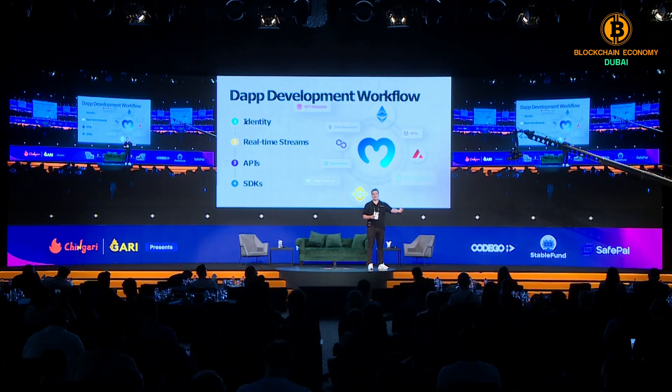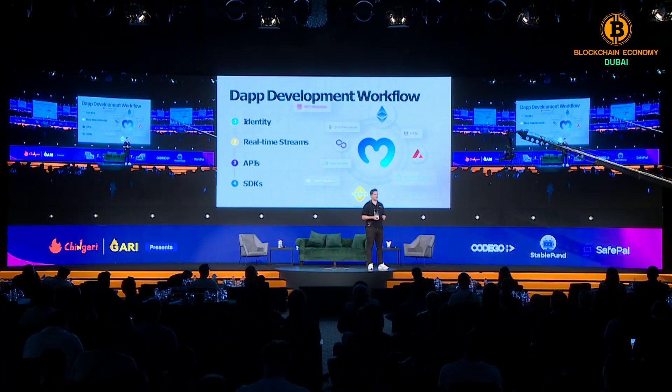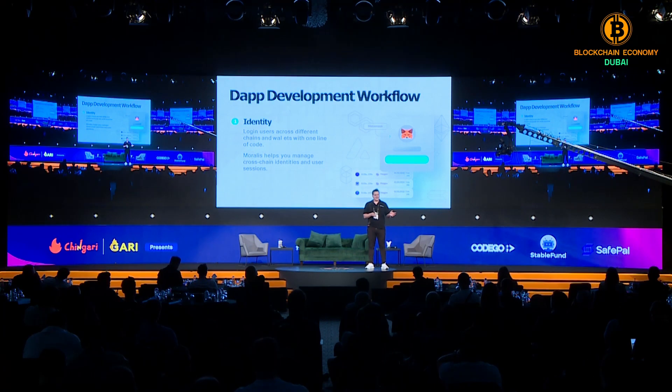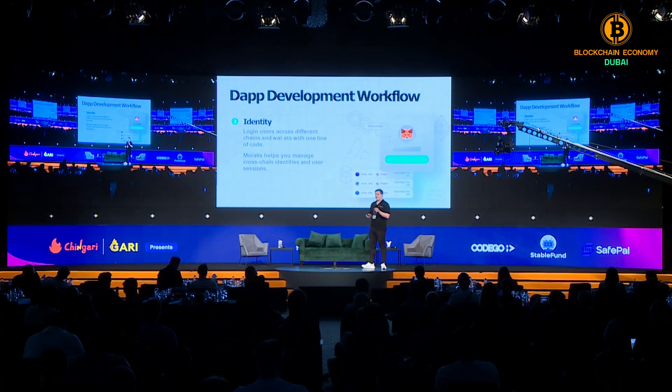Finally, number four is all about SDKs — how to integrate this into tech stacks, whether you have a Node.js application or a .NET application. When it comes to identity, the challenge is that users are everywhere. You've got to have good identity solutions. Users can be on Solana, Ethereum, or Polygon. It's very important to be able to log them in and get all their assets and activity from all the different chains. That's what we provide with Morales Identity.